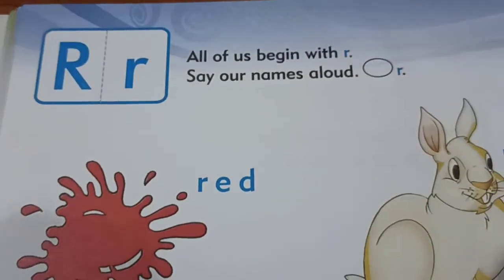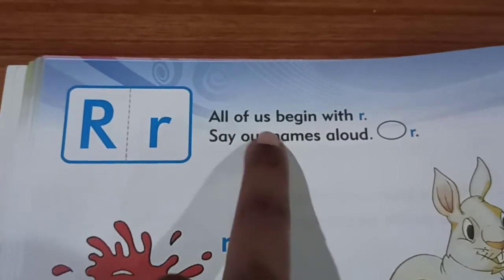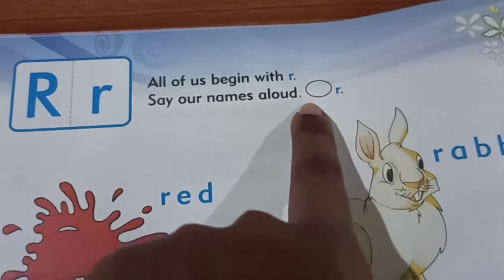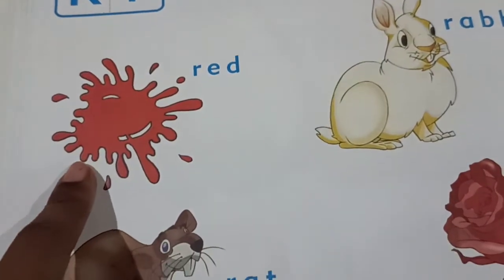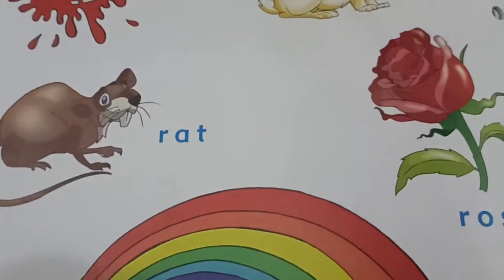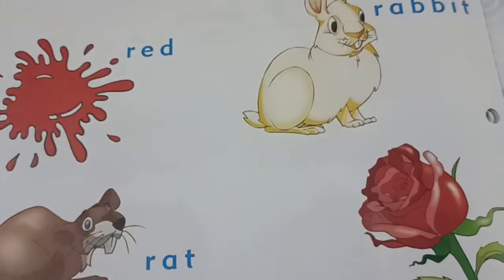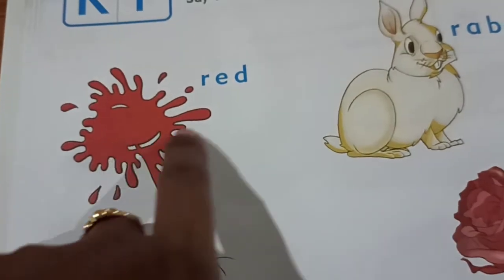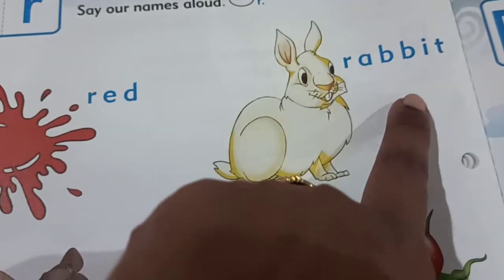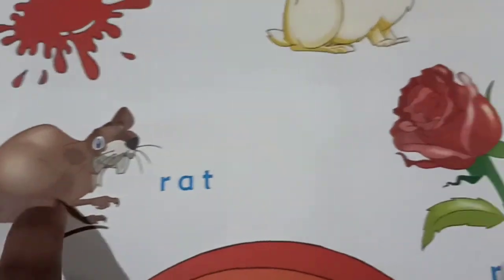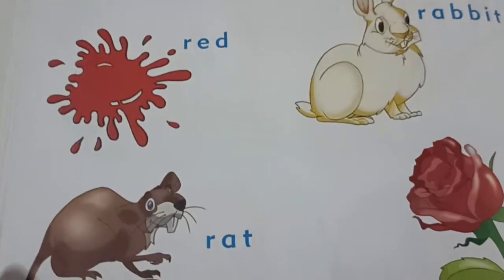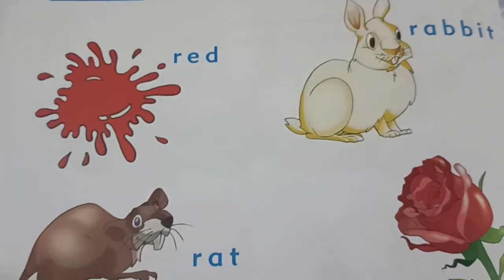Next, continuation of worksheet number 13: all of these begin with R. Circle the R. Children, you can see we have so many objects here — all of these begin with letter R: R for red, rabbit, rat, rose, rainbow. All these are starting with letter R.